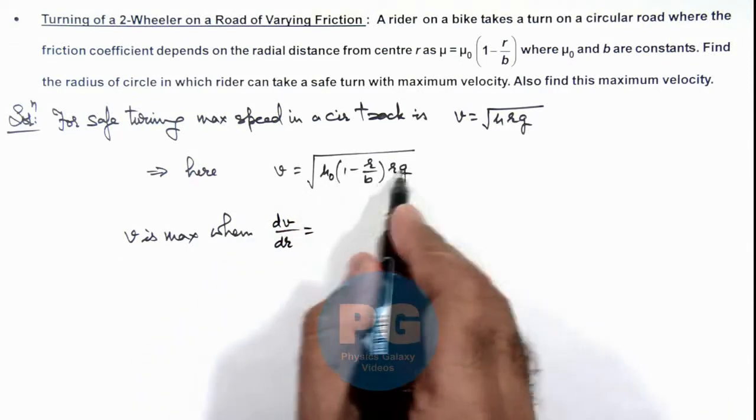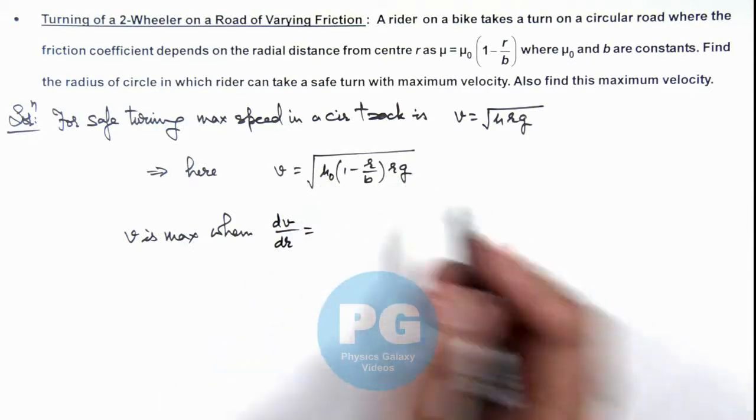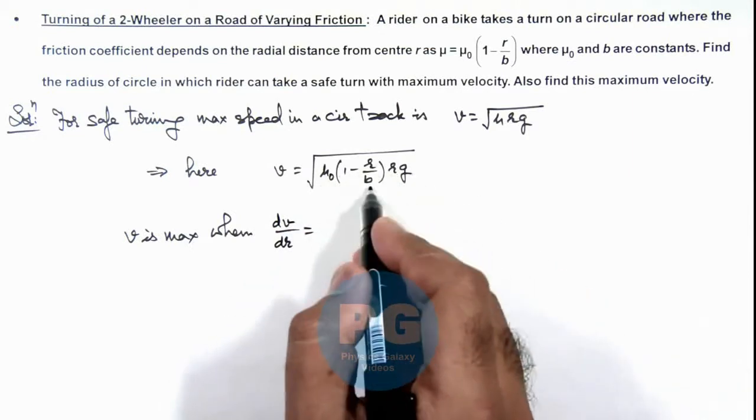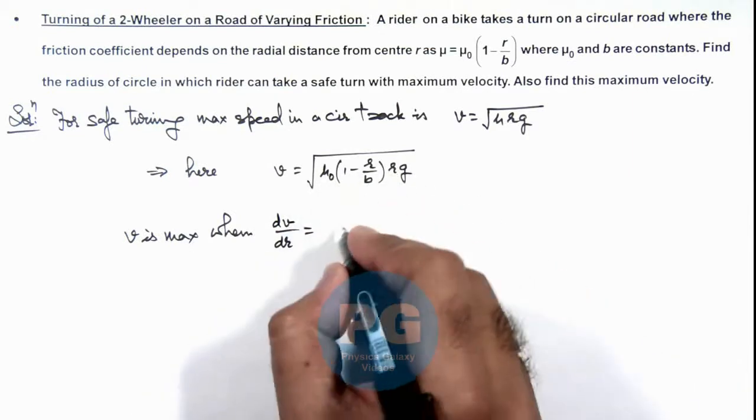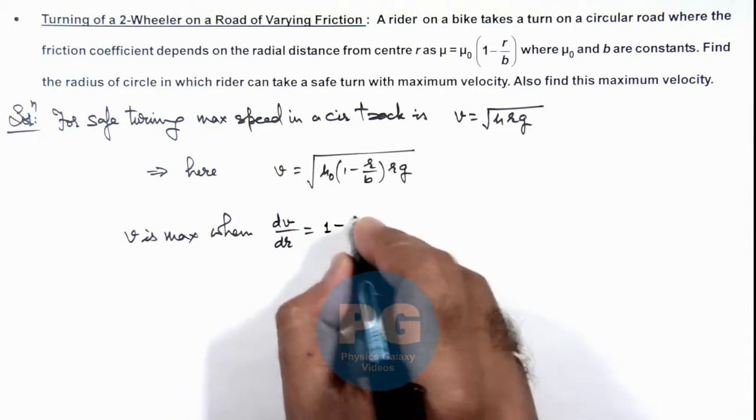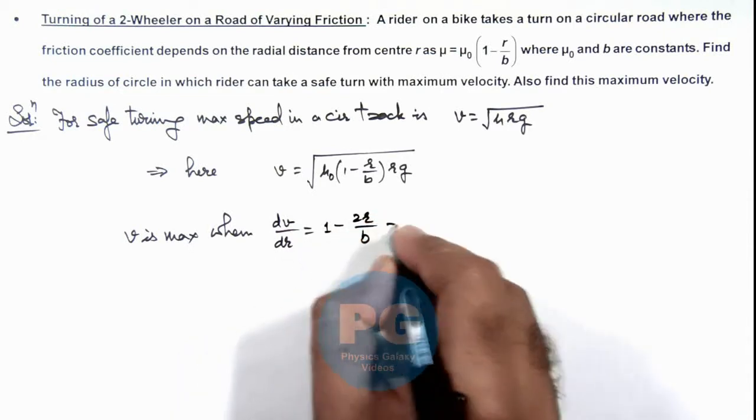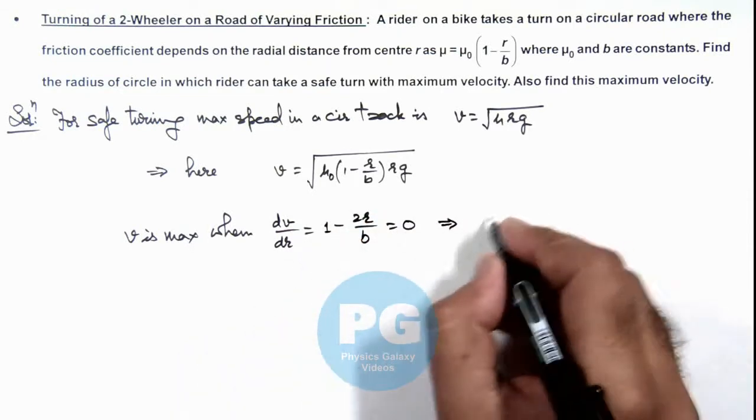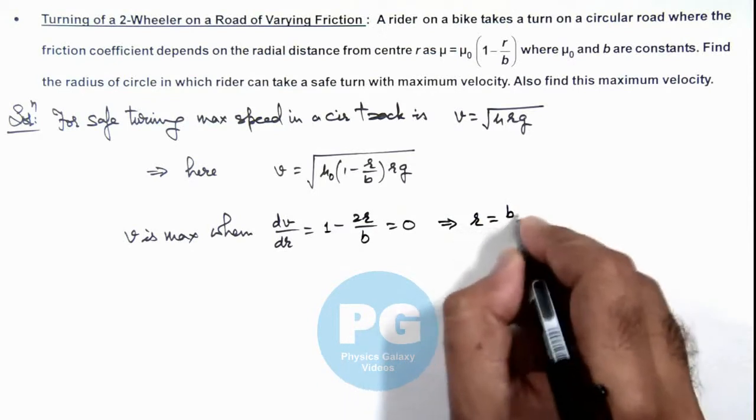If we differentiate this relation, μ₀ and g are constant, so r - r²/b, when we differentiate: 1 - 2r/b = 0, which implies r = b/2.